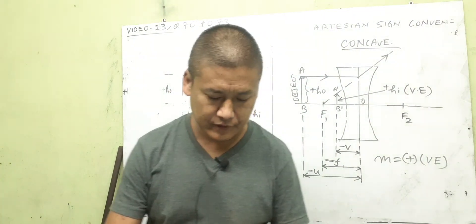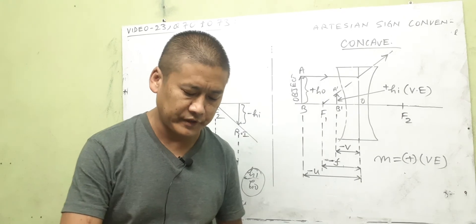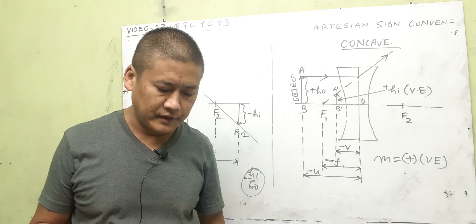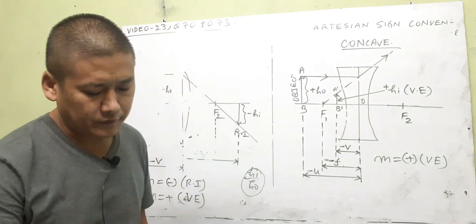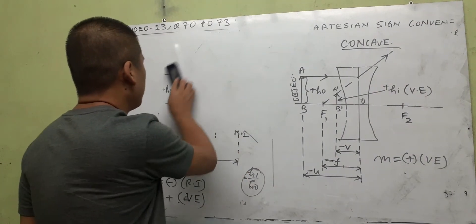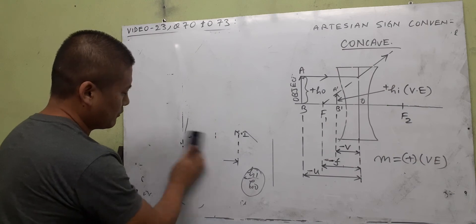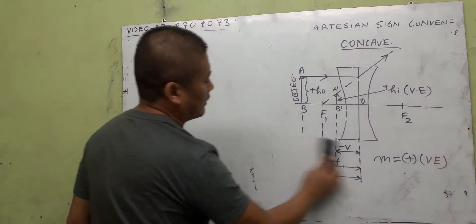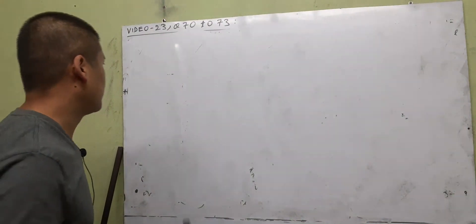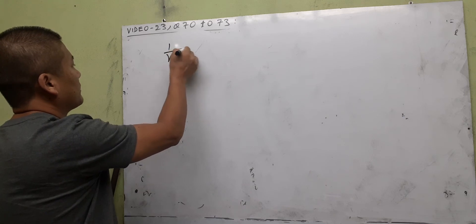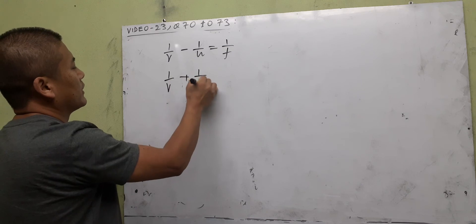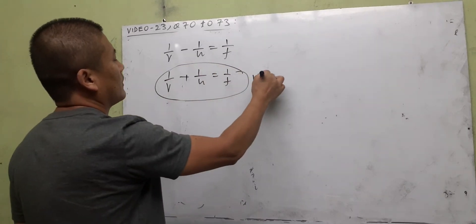Question 71: What is the lens formula? The equation which gives the relationship between image distance v, object distance u, and the focal length f of a lens is called the lens formula. The mirror formula is: 1/v + 1/u = 1/f. The lens formula is: 1/v − 1/u = 1/f.